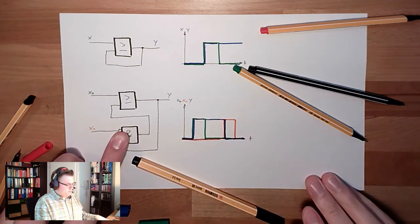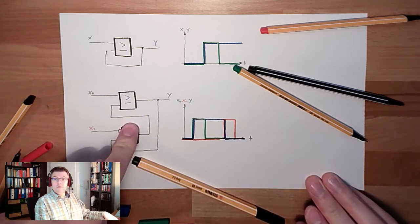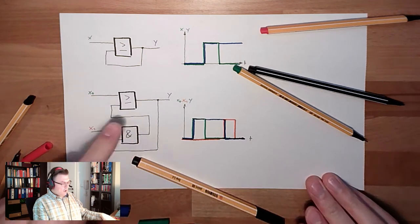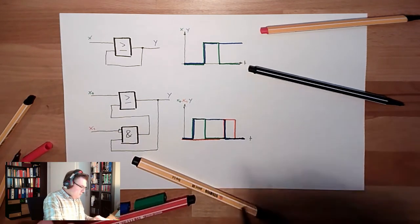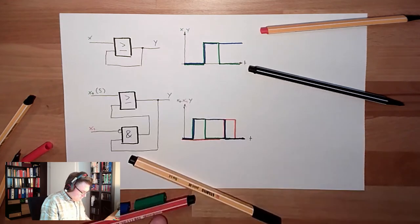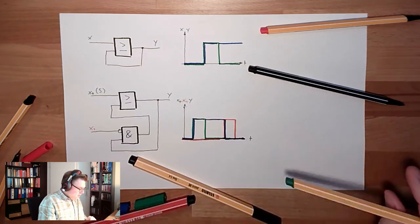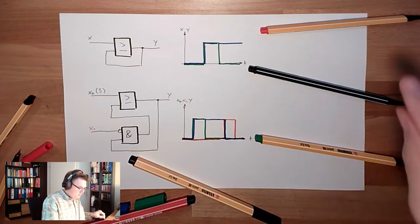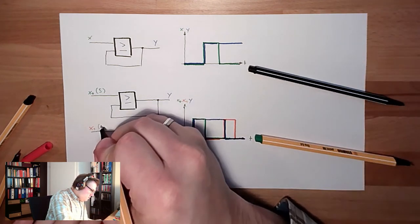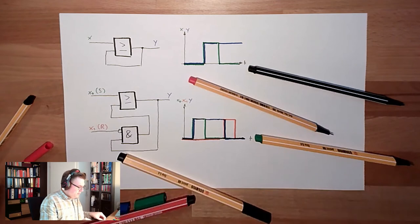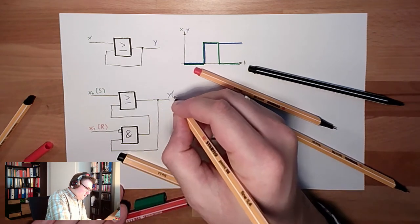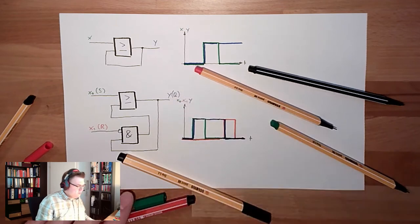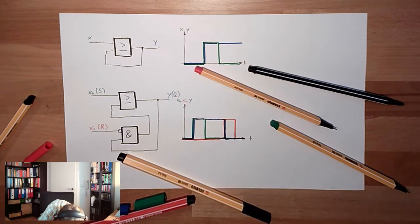Okay — memory. This is a memory. I can set it, so x0 is usually called the set line. I can delete it, so x1 is usually called the reset line. And I can watch what is inside the memory — this is usually called Q.